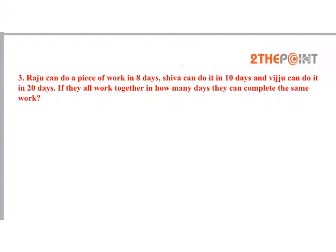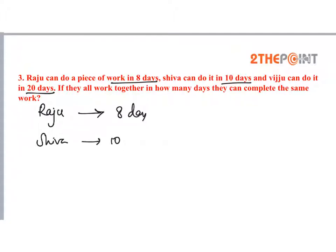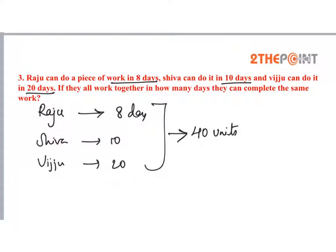Raju can do a piece of work in 8 days, Shiva can do it in 10 days, and Viju can do it in 20 days. If they all work together, in how many days can they complete the same work? Raju completes the work in 8 days, Shiva in 10 days, and Viju in 20 days. The total work is the LCM of 8, 10, and 20, which is 40 units.